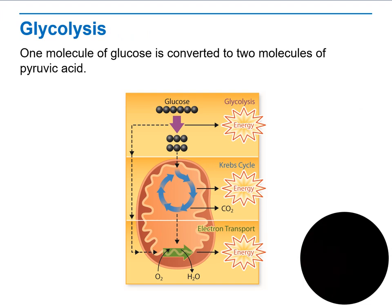First of all, we need to understand the word glycolysis. Glycolysis means one molecule of glucose is converted into two molecules of pyruvic acid. What is pyruvic acid? Pyruvic acid is a mediator — it is a product that occurs in the middle of the process. It is not the beginning and not the end product; it is something that gets produced in the middle, which is called pyruvic acid.